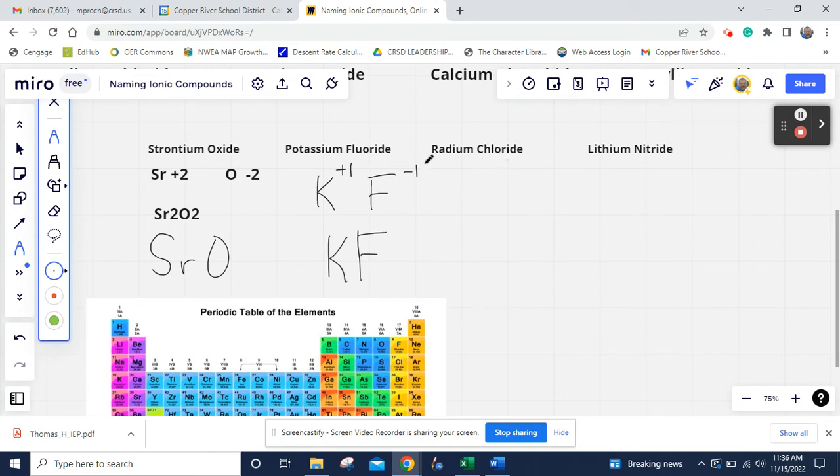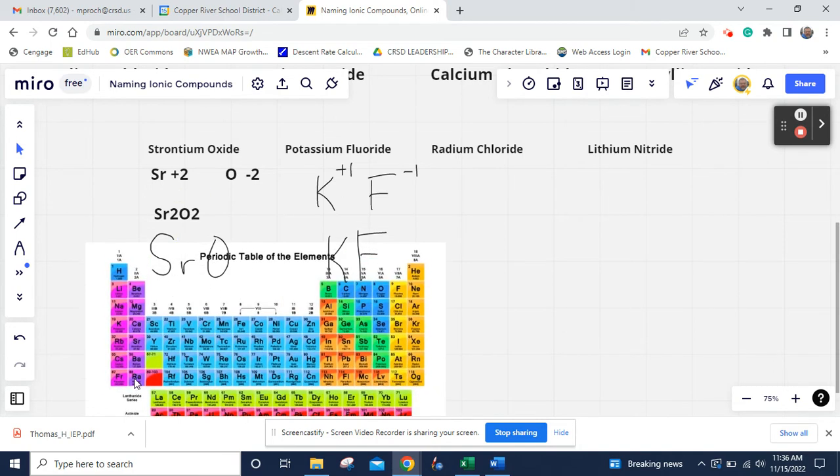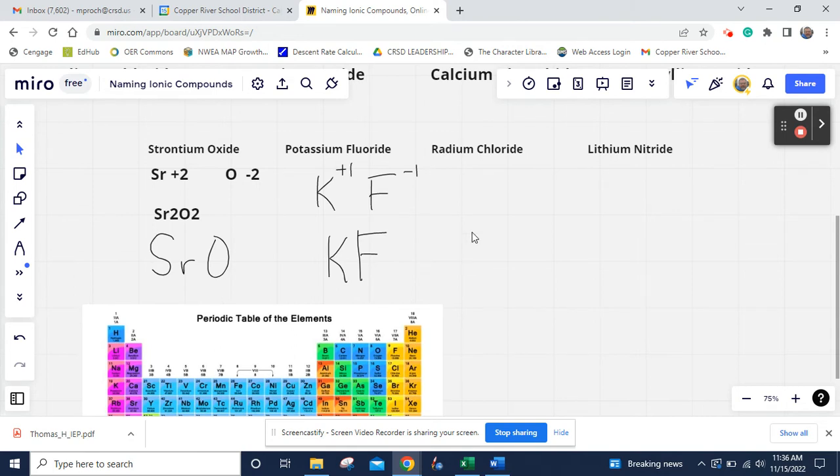Then we have radium chloride. You might not have learned radium. Let's see if we can find it. It's in group one or two. And there it is there. Group two, the bottom one. So then we're going to write that Ra, and that's going to be plus two. And then chlorine, Cl. You should kind of know this one. Right here. That's going to be minus one. And that tells us our numbers. Two goes to chlorine, one goes to radium. So when we write it, it's RaCl2.